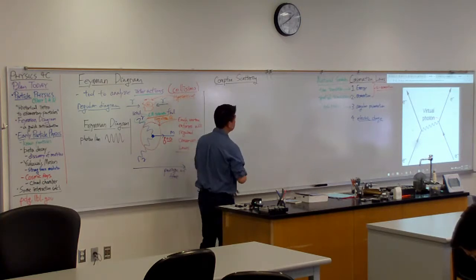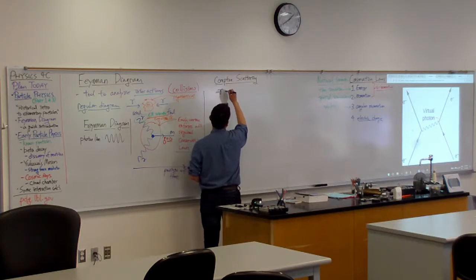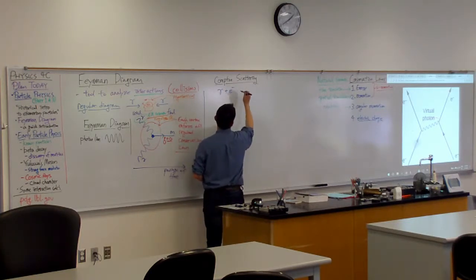So Compton scattering, this is kind of the reaction diagram you might draw. A photon comes in, collides with an electron, and then, well actually I guess nothing changes.